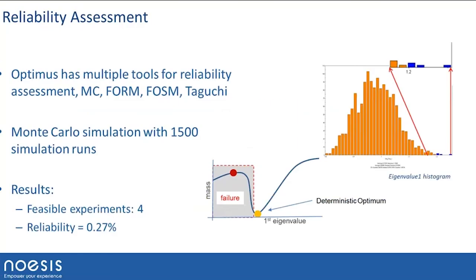We perform a reliability assessment through a Monte Carlo simulation — basically a sampling around your design point with a specific distribution coming from manufacturing and web thickness tolerances. When carried out around the optimum design using 1,500 simulations, only four were satisfying, meaning a reliability of only 0.27% — not at all what we want. So the deterministic optimum is fine from a deterministic point of view, but not good at all for reliability.